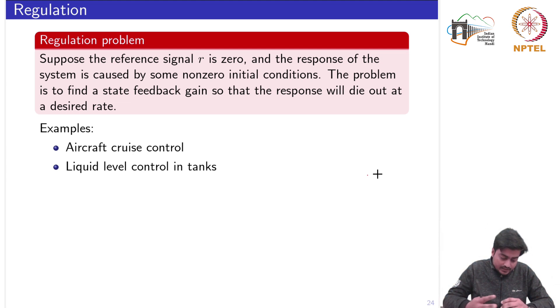The further classification of the generic state feedback control design problem are two: first is the regulation problem and second is the tracking problem which we will discuss later.